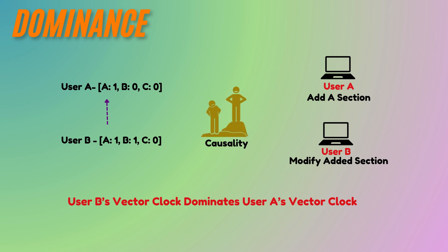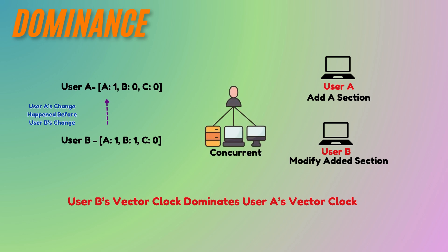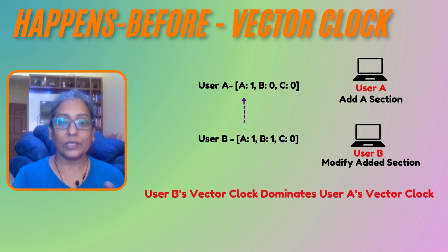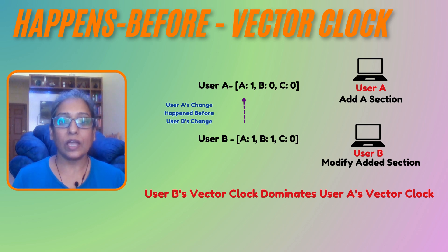This indicates that the first update happened before or as part of the second update. If neither vector clock dominates the other, it means the updates are concurrent — they happened independently and without knowledge of each other. In our earlier happens-before relationship example, User B's vector clock dominates User A's, meaning User B's changes happened after being aware of User A's updates.